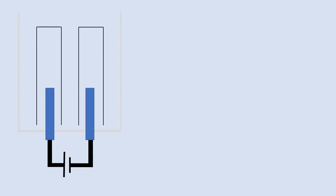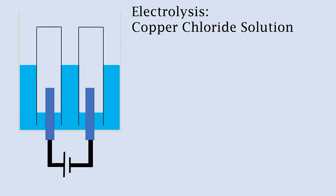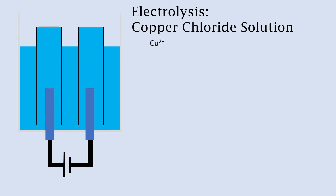Here we have the electrolysis of copper chloride. We have a glass tube with a bung and two electrodes pointing upwards, which we fill with liquid copper chloride solution, also filling up the two test tubes. Inside this copper chloride solution we have copper two plus ions, chloride ions, and water making the hydrogen ion and the hydroxide ion.